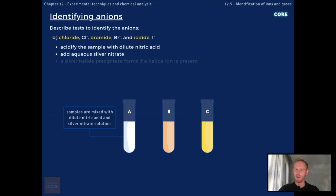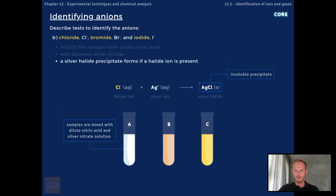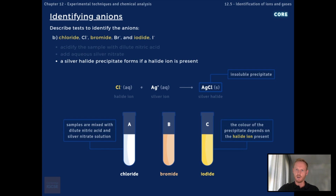To test for the presence of halide ions, which are the anions formed by the elements in group seven, acidify the sample with dilute nitric acid and then add aqueous silver nitrate. Halide anions react with silver cations from the silver nitrate to form insoluble silver halide precipitates. The colour of the precipitate depends on the specific halide present: chloride ions form a white precipitate of silver chloride, bromide ions form a cream precipitate of silver bromide, and iodide ions form a yellow precipitate of silver iodide.